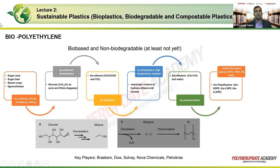Bio-polyethylene is an example of a bio-based but non-biodegradable material. Sugarcane, sugar beets, or starch crops are used to collect sugar, which is converted into glucose and passed through anaerobic fermentation stages to yield bioethanol. Distilling bioethanol gives azeotropic mixtures of hydrous ethanol, and by dehydration this is converted into bioethylene, which is then polymerized into bio-polyethylene — but biodegradability is not present. Other bio-based non-biodegradable materials include bio-PVC, bio-PS, and bio-PU.